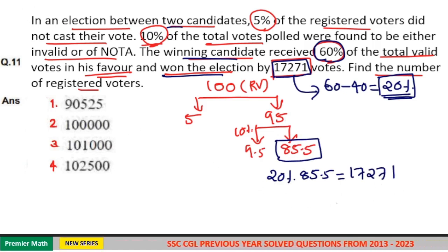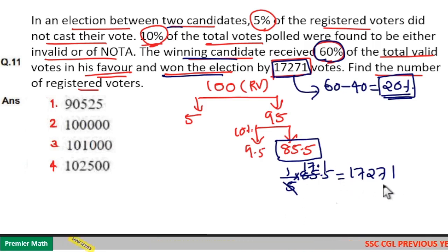Now I will write 20% as 1 by 5. 20% is 1 by 5. Now 5 goes 17 times in 85. 5 goes 1 time in 5. Now 17.1 is equal to 17,271. Now if I multiply it with 10 on both the sides, 171 is equal to 172,710.